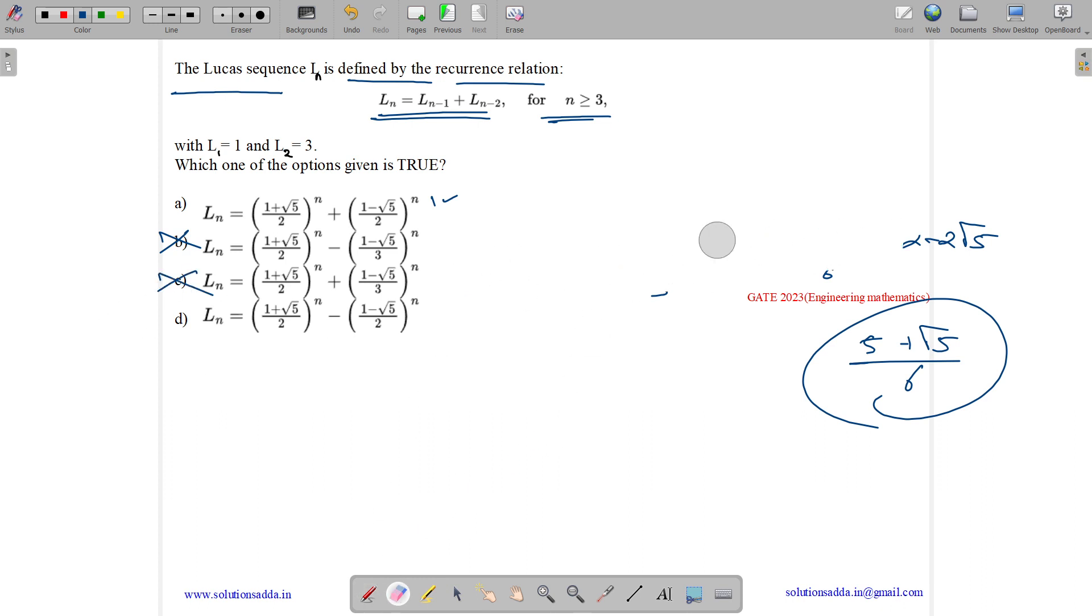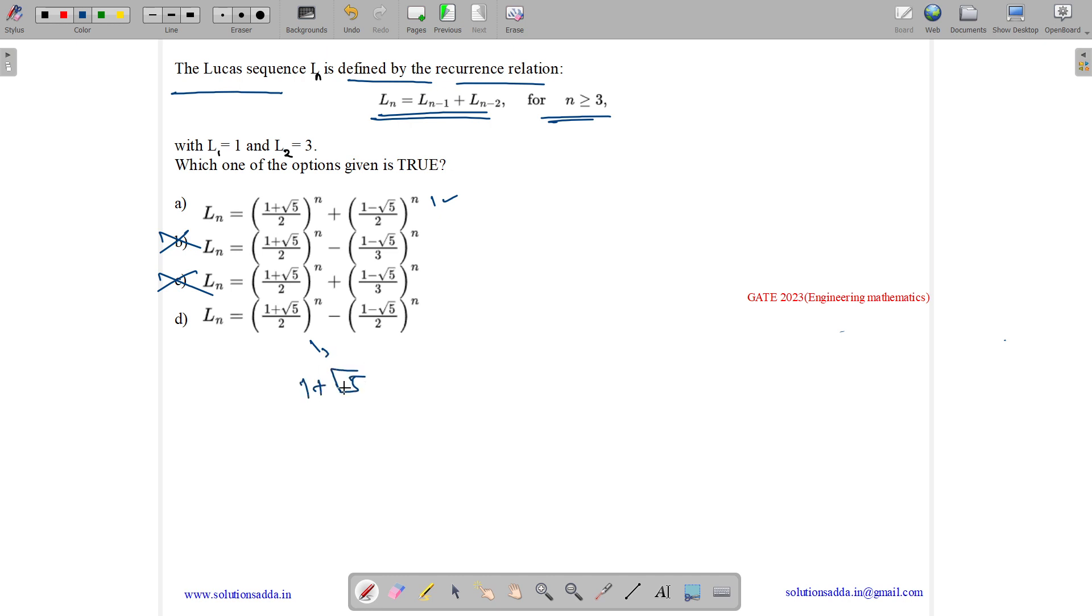Let us see for option D. You can easily do these questions by checking options only in most of the time. So option D for n equals to 1 is 1 plus root 5 by 2 minus 1 plus root 5 by 2. So root 5 plus root 5 is, this one get cancelled. We have 2 root 5 by 2. So by n equals to 1 only, you can find out easily. As here everything will get cancelled out.